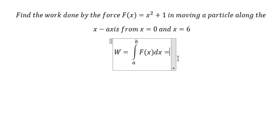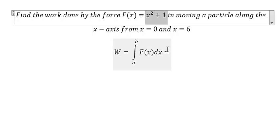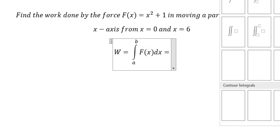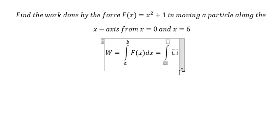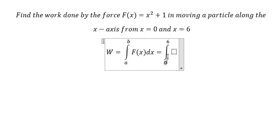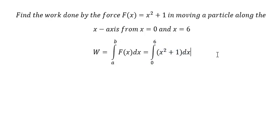We have a that is about number zero, b that is about number six, f of x that is about this one. So we have the integration from zero to number six and we put x² plus one here.